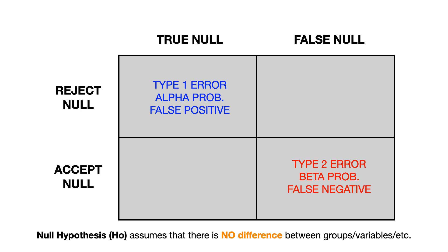The reason this is a false negative: in this example we have a false null. The null hypothesis assumes no difference between groups, and here the truth is that the null hypothesis is incorrect — so it's incorrect that there's no difference, meaning in reality there is a difference. However, the person drawing the conclusion has accepted the null, accepting the fact that there's no difference, when the truth is that there is a difference. Therefore, this is called a false negative.